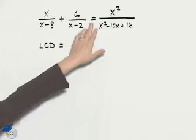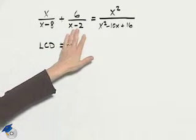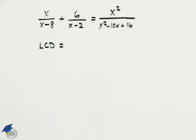We're asked to solve this equation. We note that we have fractions in this equation, so we want to multiply by the least common denominator so that we can get rid of the denominators.